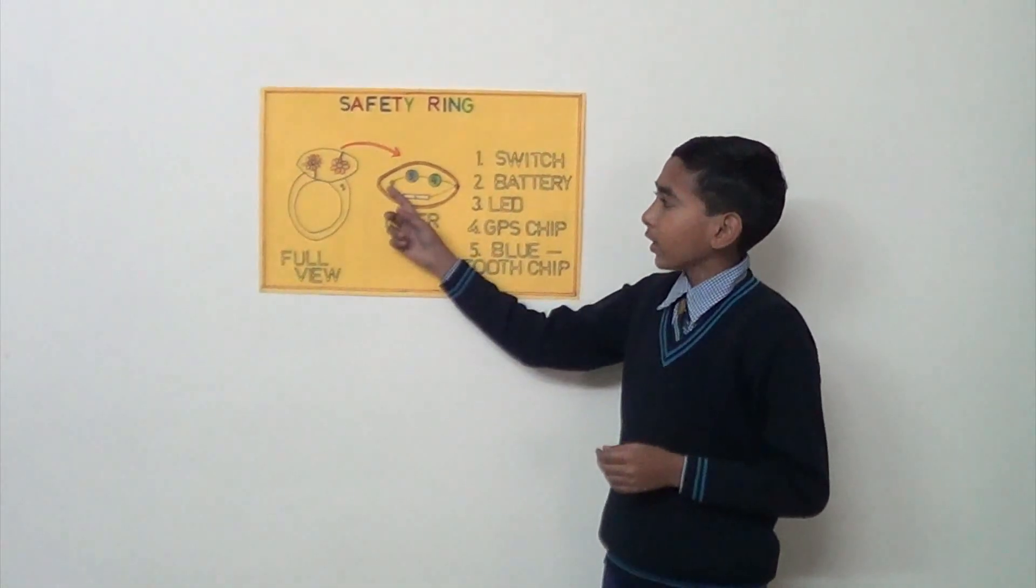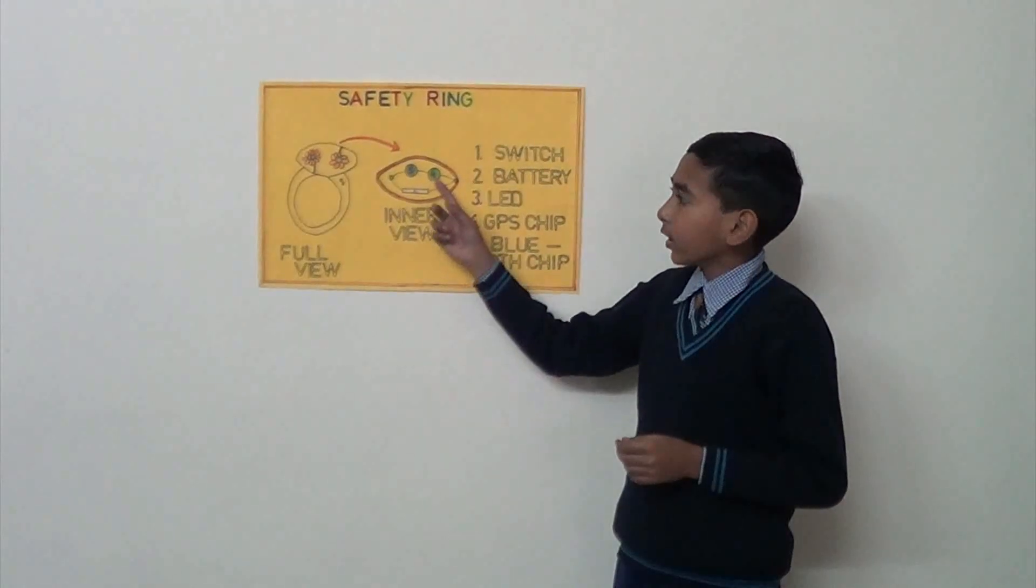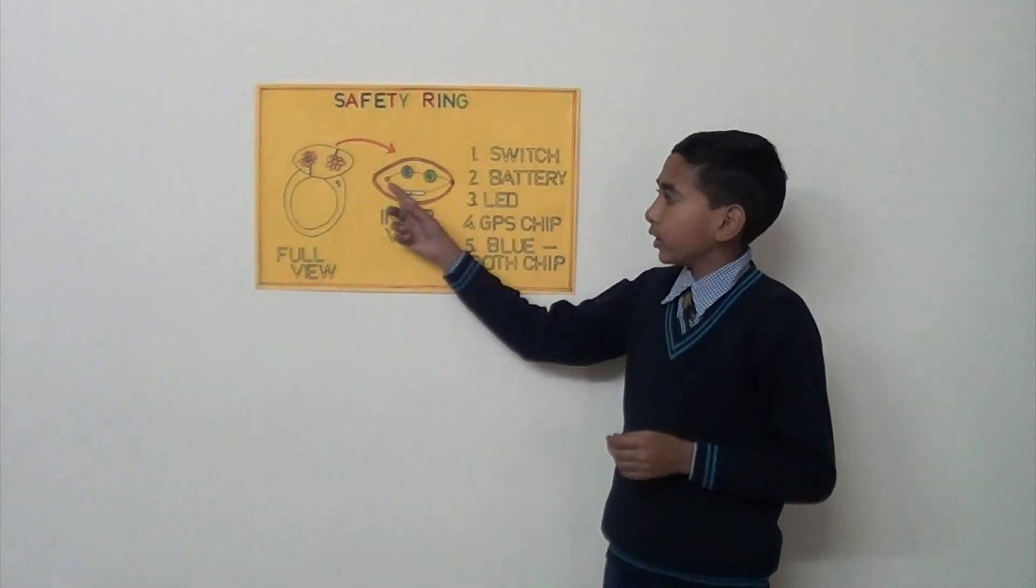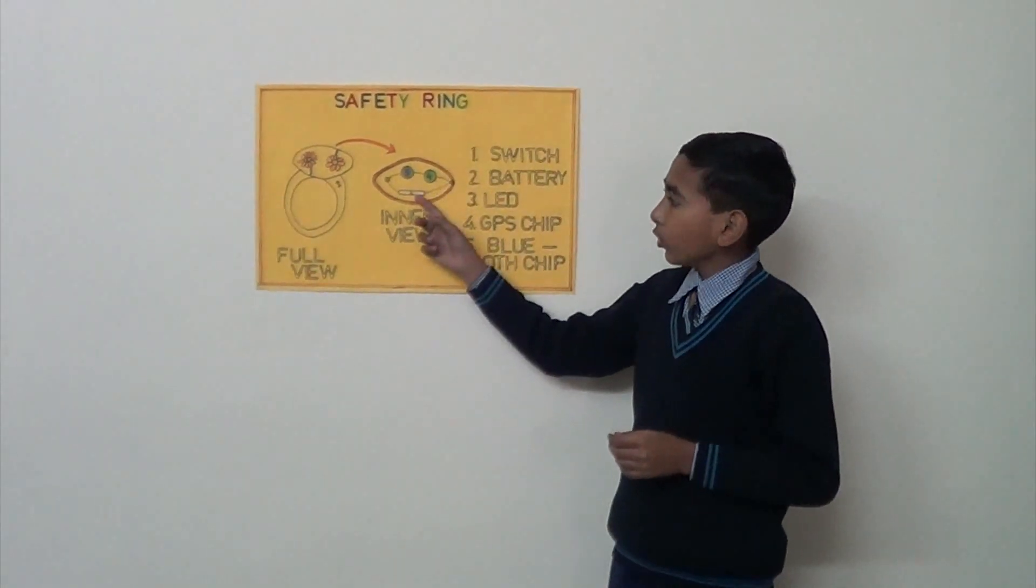When the switch is activated, the Bluetooth chip and GPS tracker will both operate through the switch and send a call to the police station.